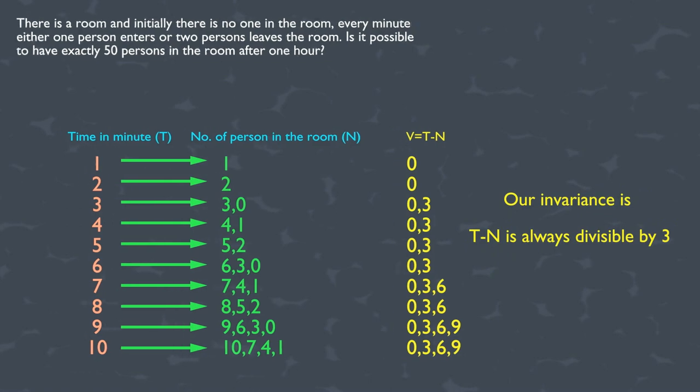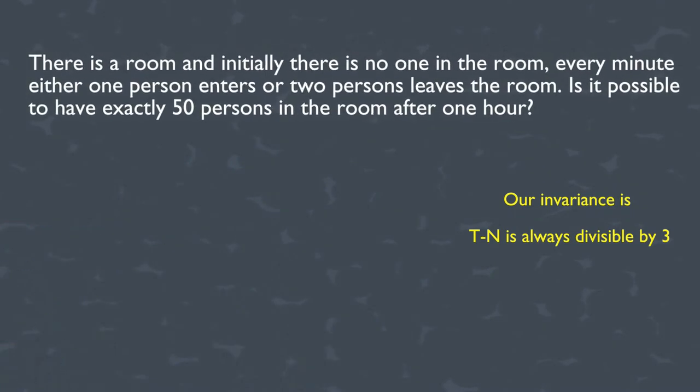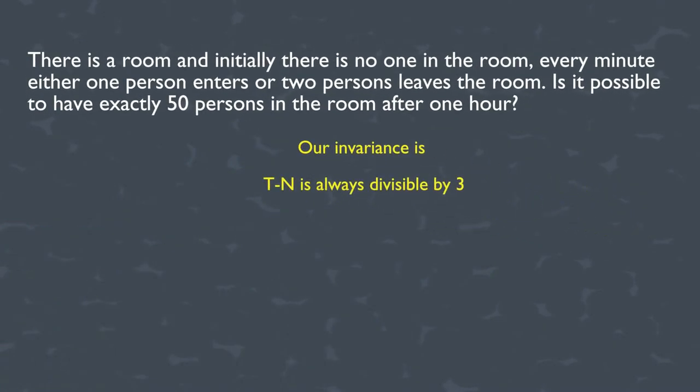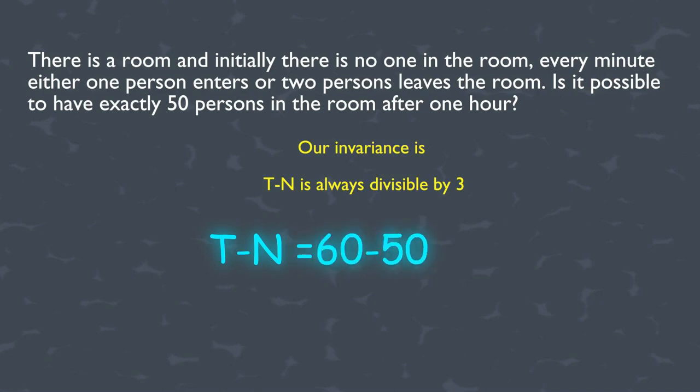Now let's look at the main question, which is, is it possible to have exactly 50 persons in the room after 60 minutes? So if we do T minus N, that means time minus number of persons in the room, then we will get 60 minus 50, which is 10.